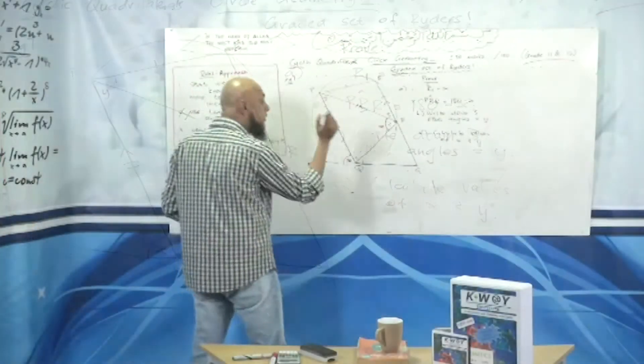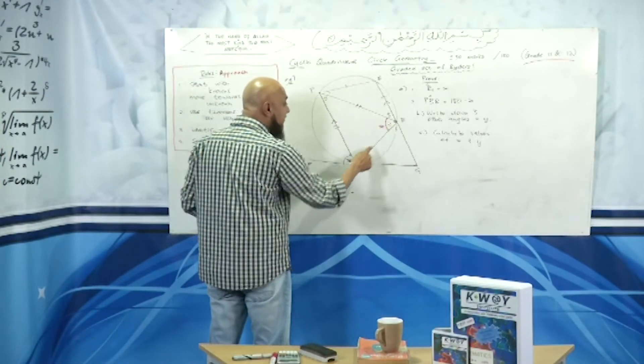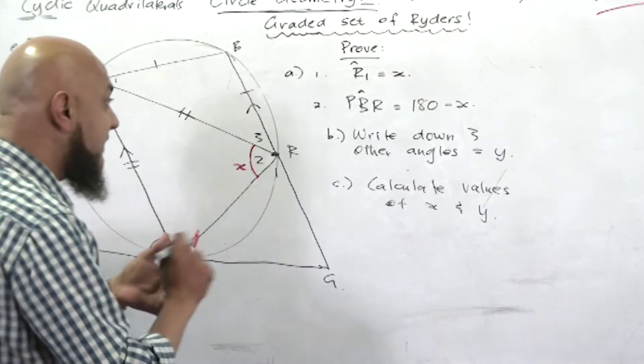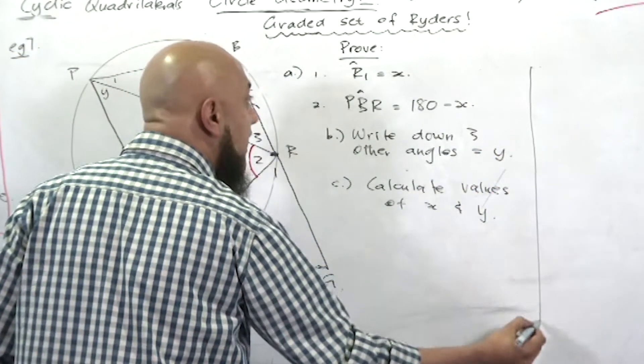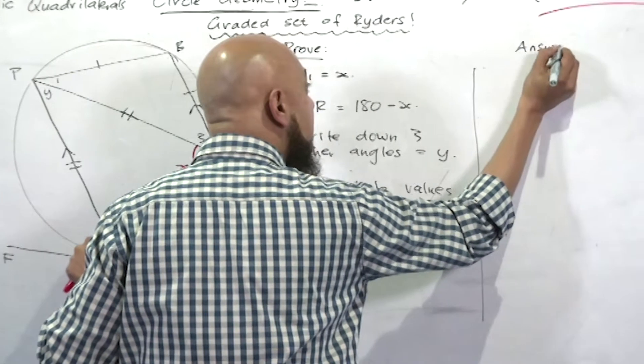Which other angle do we know? Guys, this is an isosceles triangle. So in our answers, watch here - I'm now going to put the questions on one side and I'm going to do the answers and the reasoning on this side of the board.